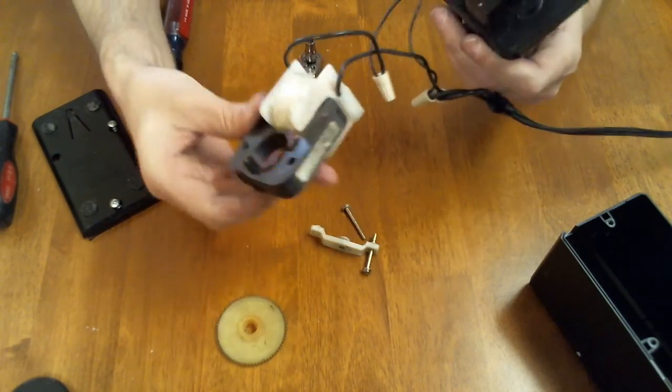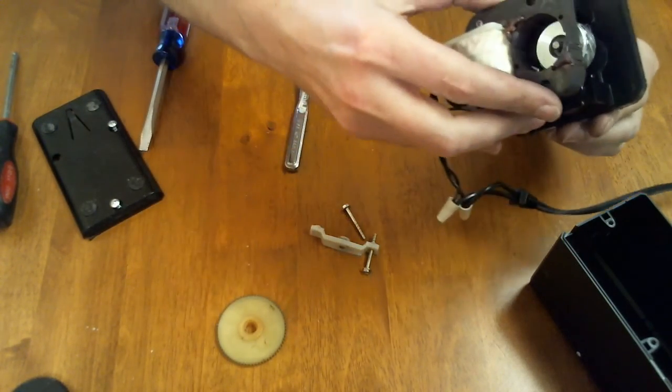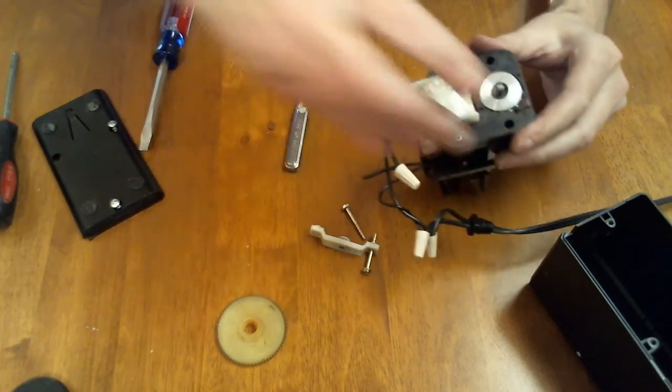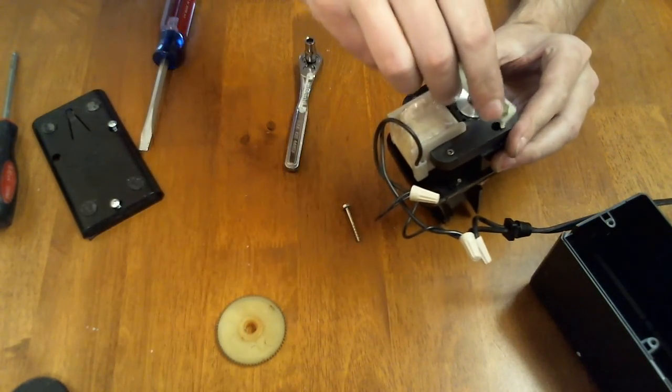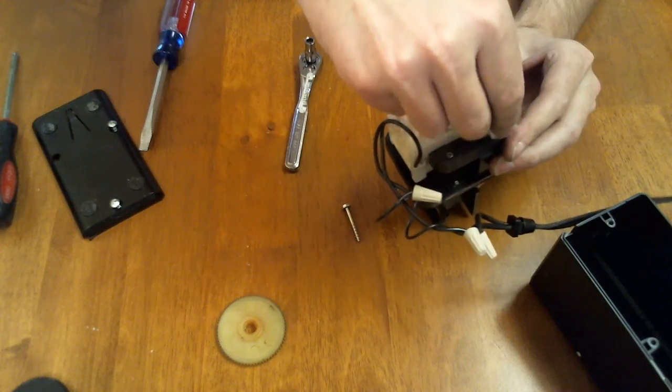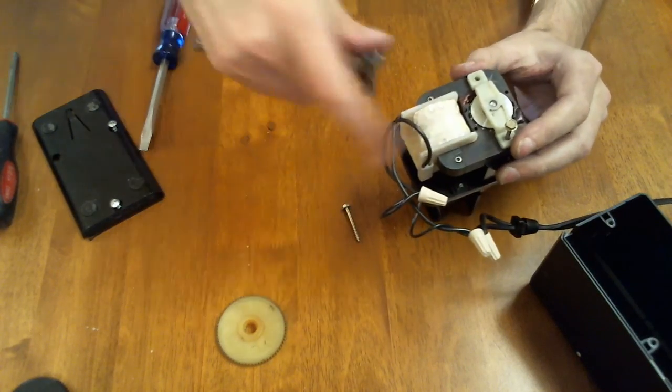Putting the motor assembly back on, make sure that the X is facing out. Then place this piece back on here as such, and then tighten it down with your socket wrench.